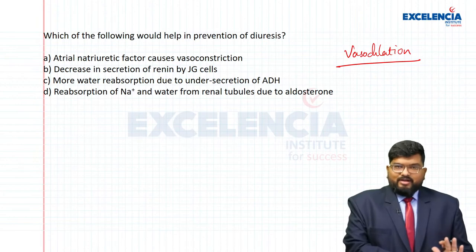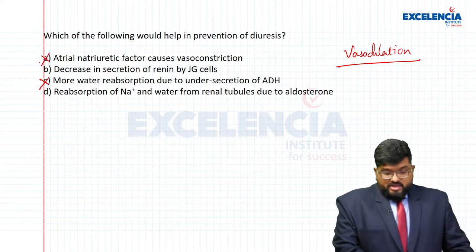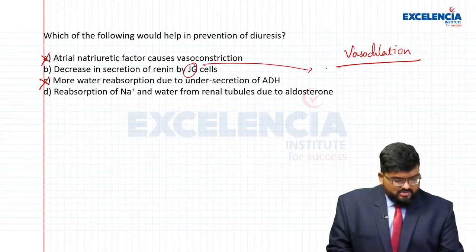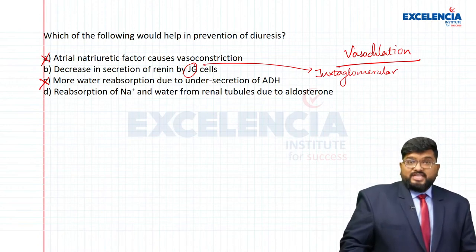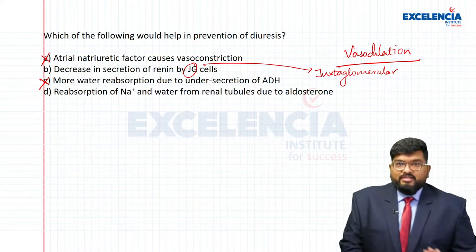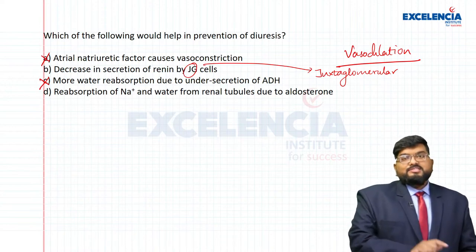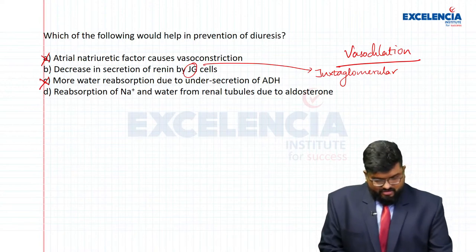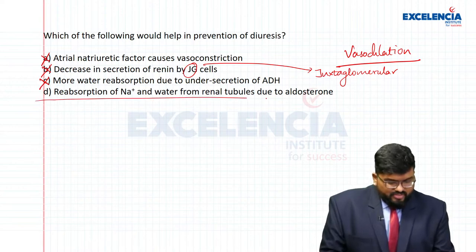Decrease in secretion of renin by juxtaglomerular (JG) cells: JG cells secrete renin, which is responsible for the angiotensin mechanism. A decrease in renin secretion is not going to be of any help in preventing diuresis. So using the elimination method, let us confirm the correct answer.